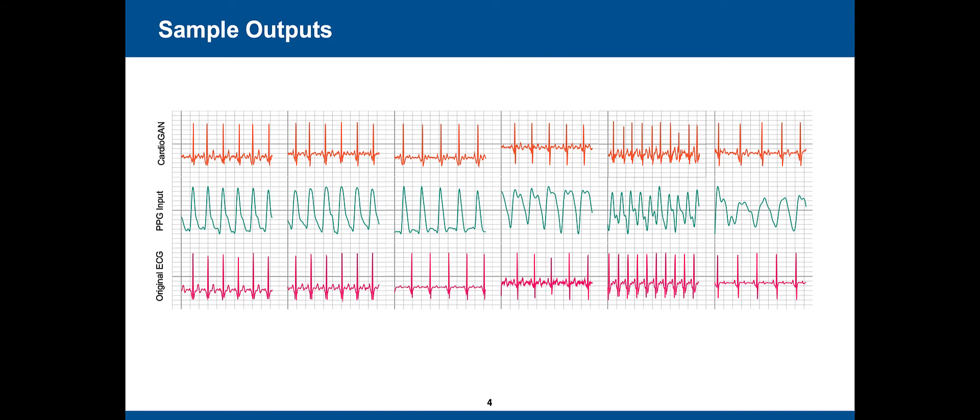Here, we present several sample input-outputs along with the ground truths. The topmost row shows the ECG generated by CardioGAN, the middle row presents the given PPG inputs, and the ground truth ECG is presented at the bottom row for reference.